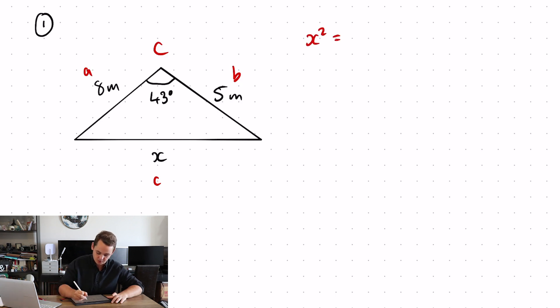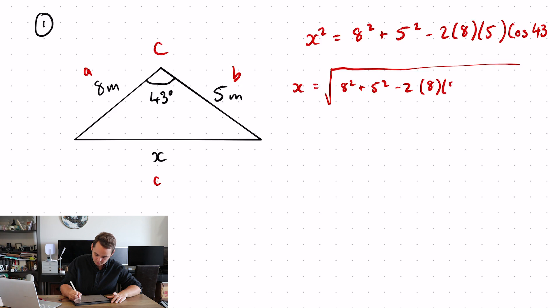So my formula is going to look like X squared is equal to 8 squared plus 5 squared minus 2 lots of 8 lots of 5 cos 43. To get X by itself I'm now just going to square root all of that. So 8 squared plus 5 squared minus 2 lots of 8 lots of 5 cos 43. Type that into your calculator to get a length for X as 5.5 meters.